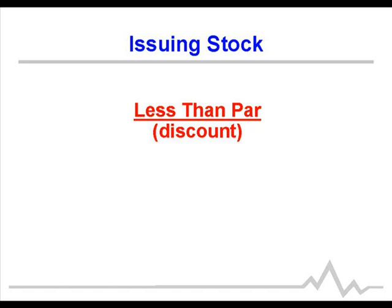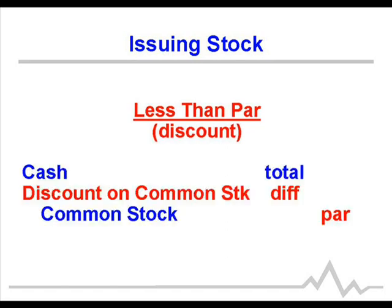Issuing stock for less than par is called issuing at a discount. If you issue stock at a discount, the cash received is less than the par amount. You debit cash for the amount received, credit common stock at par, and debit discount on common stock for the difference to make it balance. Discount on common stock is contra stockholders' equity — on a balance sheet it's deducted from common stock to show the net amount owners invested.